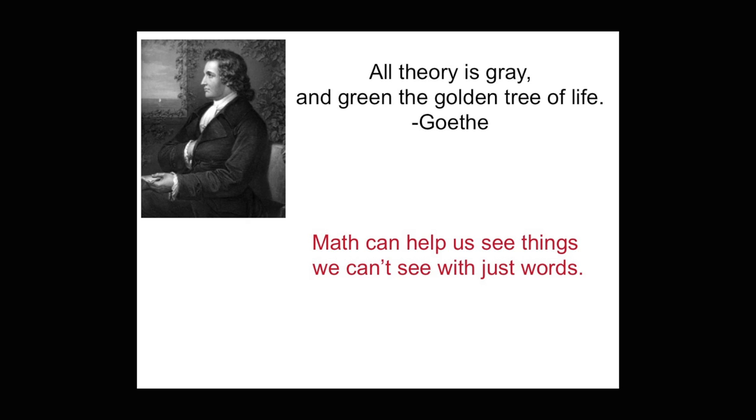Goethe basically said that leaves are green and all theories are gray. And that's certainly true — we're never going to have a mathematical model that explains all the wonderful and terrible aspects of human behavior. But the mathematics gives us another tool to add to our toolbox that can help us in some ways understand conflicts, maybe anticipate the directions they're going to go, and maybe help us think through new ways to resolve conflicts. Thank you.